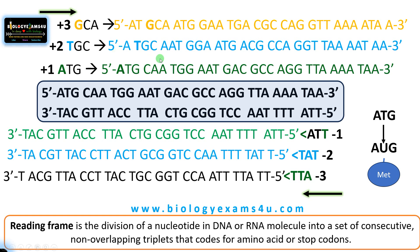Now let us find the open reading frame from the previous sequence for better understanding. We need to find the start codon ATG, which upon transcription becomes AUG coding for methionine. In the plus one frame you can see ATG and then TAA — the stop codon — which becomes UAA and does not code for any amino acid.